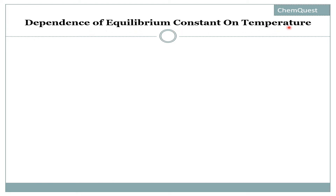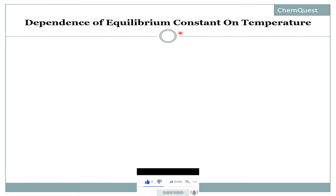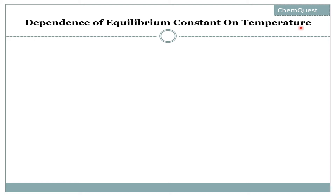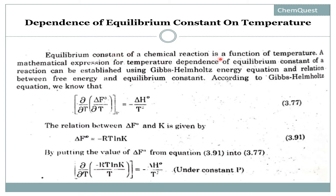The dependence of equilibrium constant on temperature. The equilibrium constant is represented by capital K, and we will see how it depends on temperature. The equilibrium constant of a chemical reaction is a function of temperature — it will change as temperature increases or decreases. A mathematical expression can be established using the Gibbs-Helmholtz free energy equation and the relation between free energy and equilibrium constant.